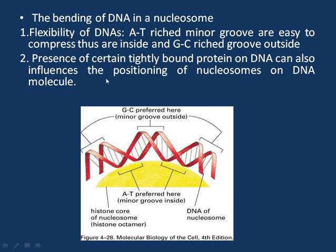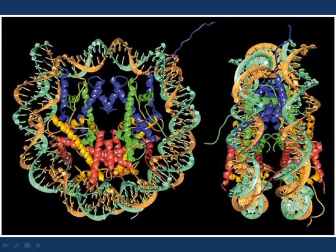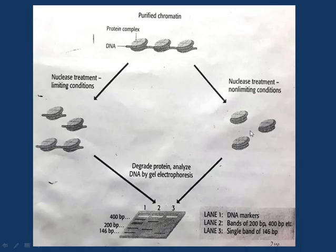The second factor is the presence of several tightly bound proteins on the DNA, which also influences the positioning of nucleosomes on the DNA molecule. To summarize: first the dimers are formed, dimers combine to form tetramers, and both tetramers combine to form the histone octamer. Then the bending of DNA around the histone octamer takes place for two turns, and this is how a complete nucleosome is formed.